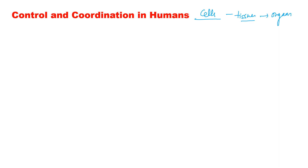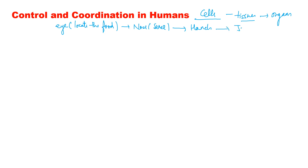Let us first understand this with an example. When we eat food, our eyes help in locating the food, our nose senses the food, our hands bring the food to our mouth, and our jaw muscles help the teeth to chew the food. All these activities occur in a coordinated manner, and if any of these activities misses or does not occur in time, then the body will not get nutrition.